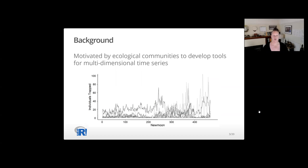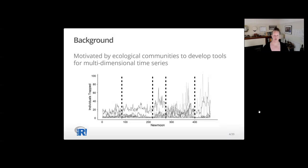This time series shows each species' counts individually over time and makes evident the changes in temporal patterns. Just eyeballing these four lines, we can see periods in the time series where both the species-level and the community-level dynamics change. For example, it's really in this last period where we see the advent of very large magnitude cycles.